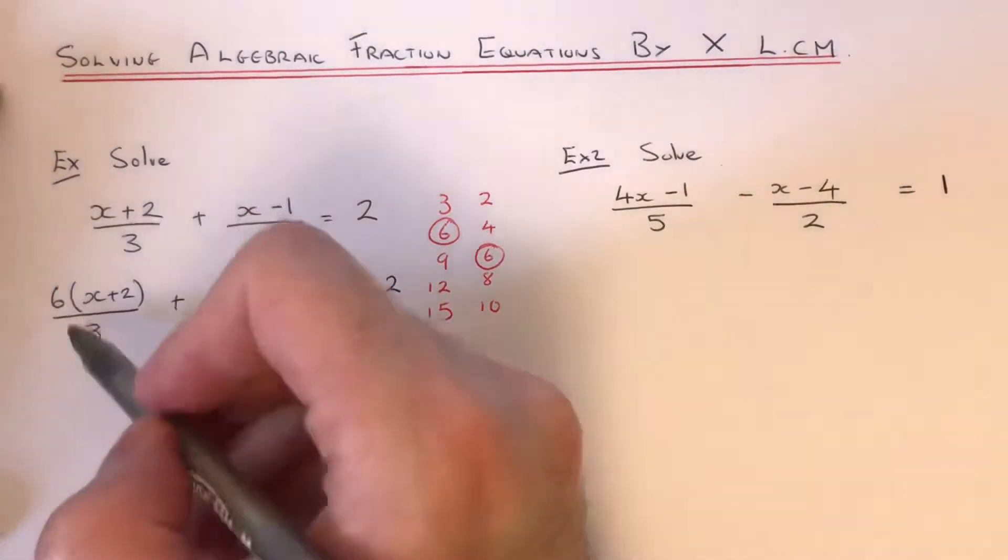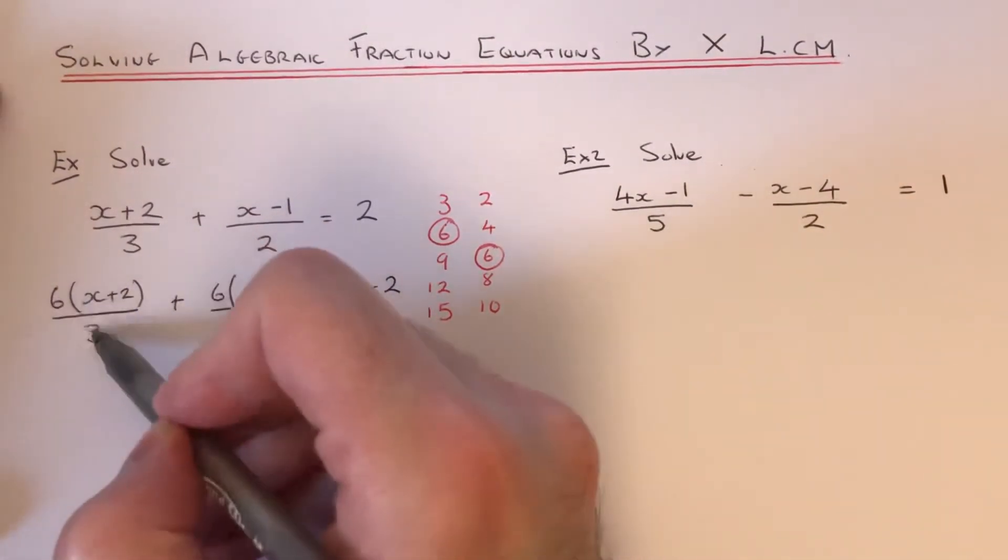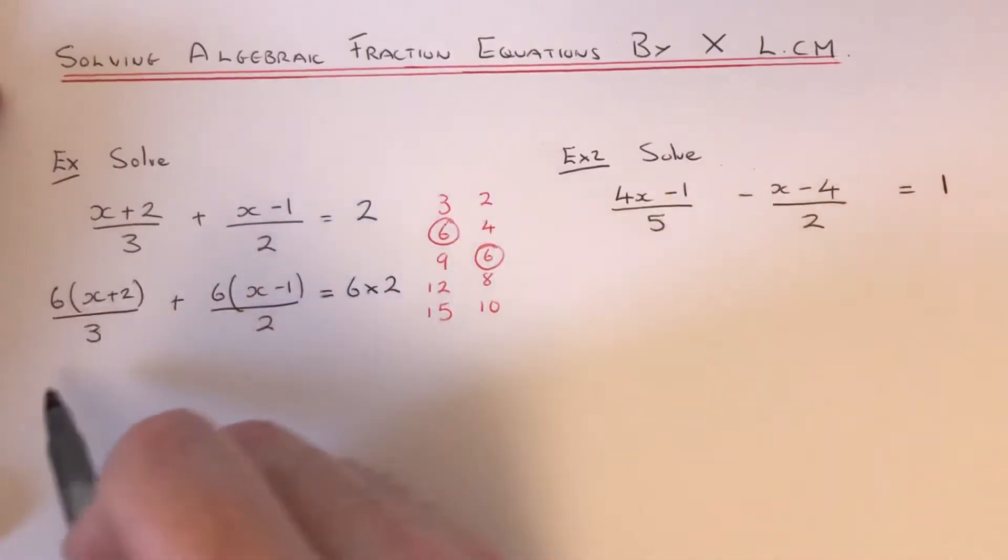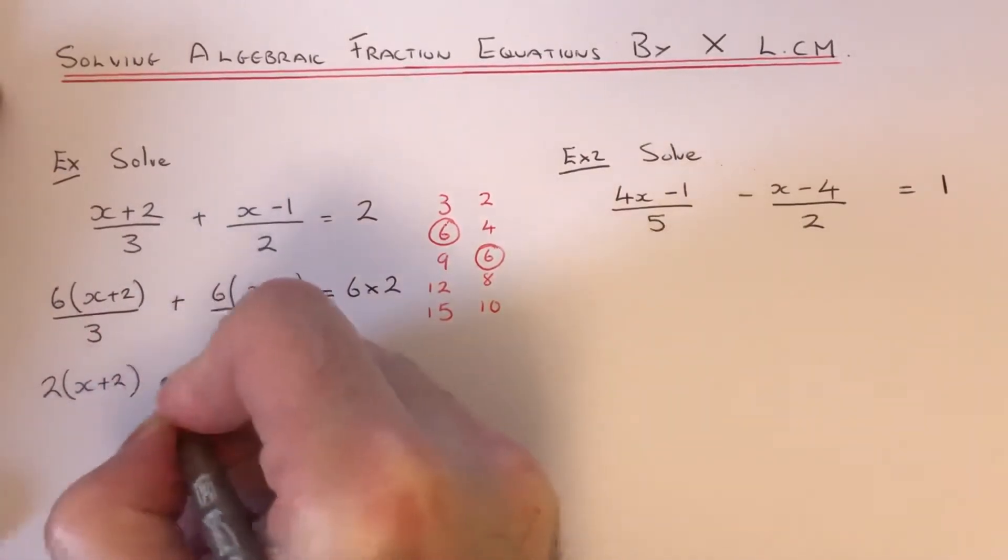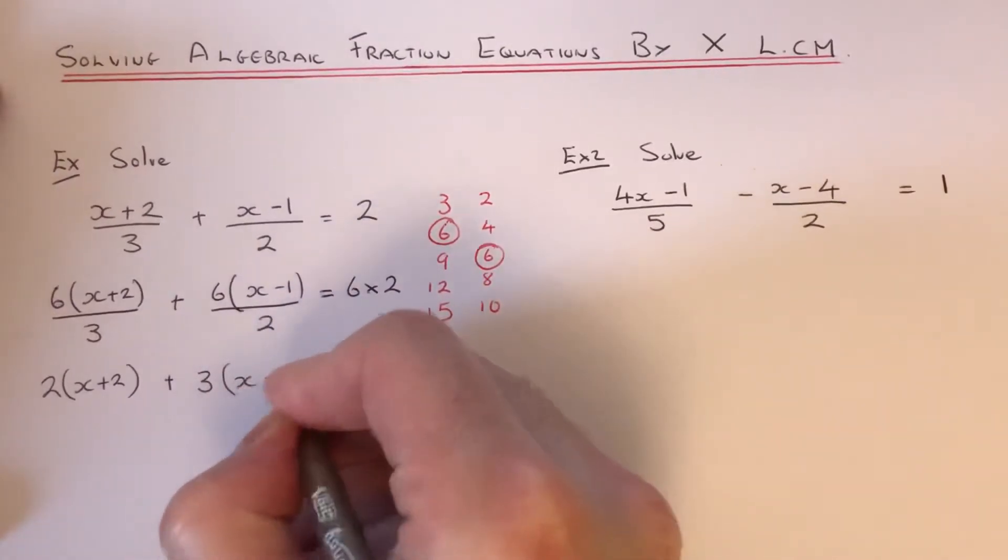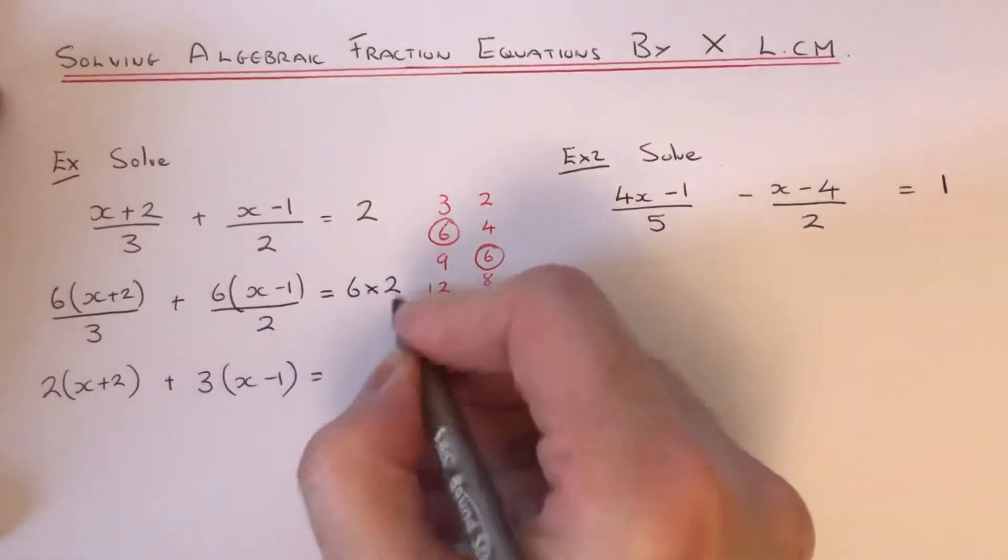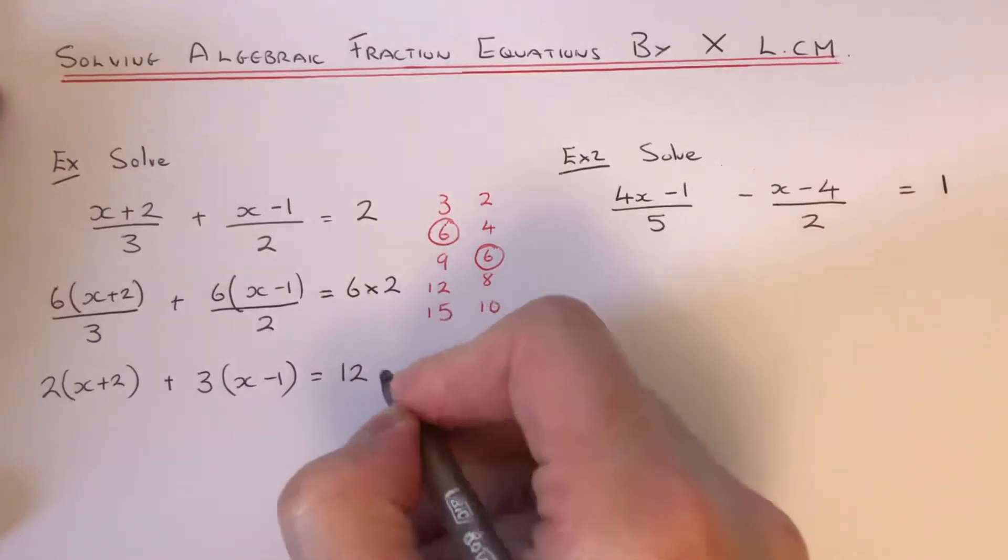What you can do now is divide each number in front of the bracket by the denominator. So 6 divided by 3 is 2. And 6 divided by 2 there, that's 3. And 6 times 2 is 12.